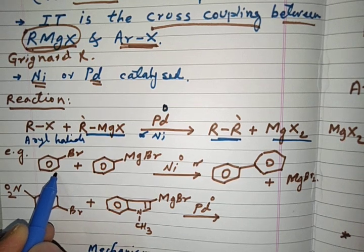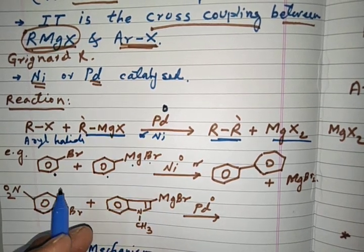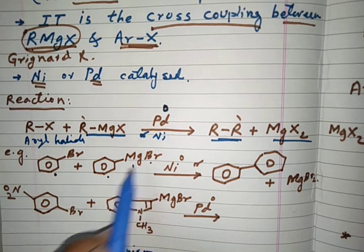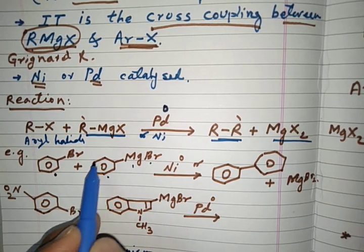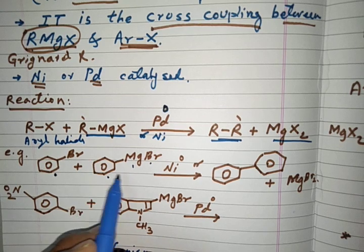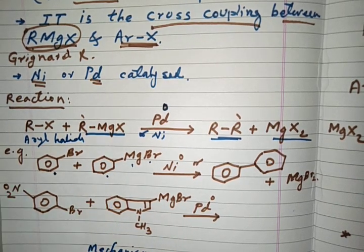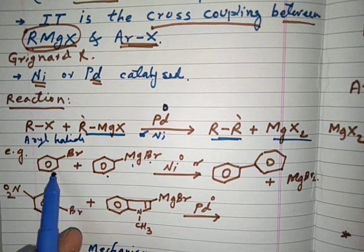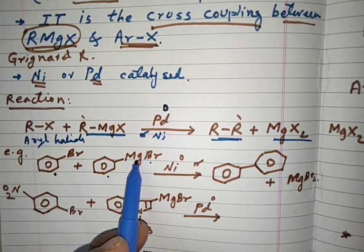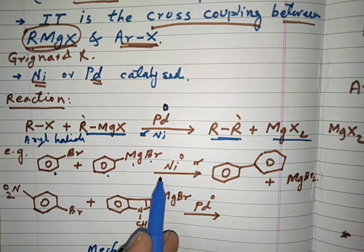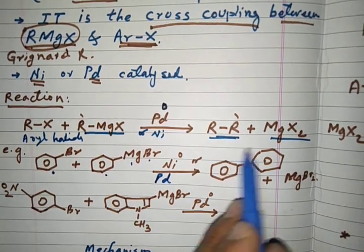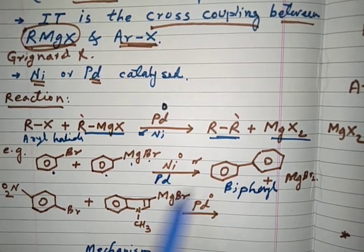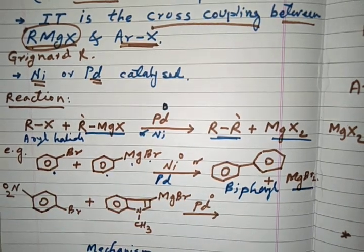Let us take a specific example. I have taken bromobenzene and phenyl magnesium bromide — this is the Grignard reagent. We can take other examples by having various groups on the ring or using different Grignard reagents. With bromobenzene and phenyl magnesium bromide in the presence of a nickel-based or palladium catalyst, the product formed is biphenyl, and MgBr₂ is the side product.